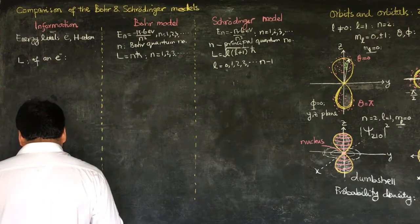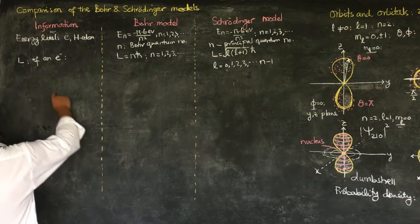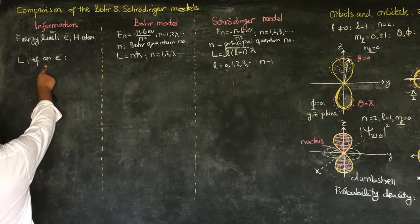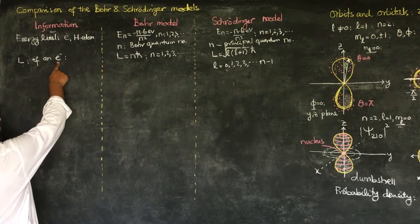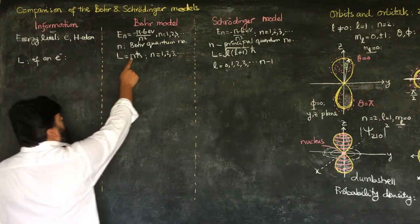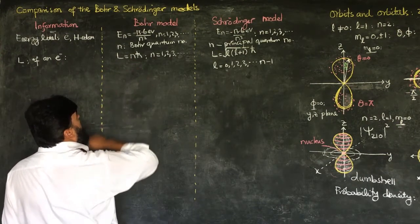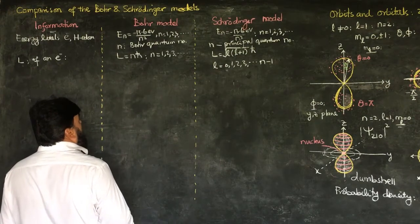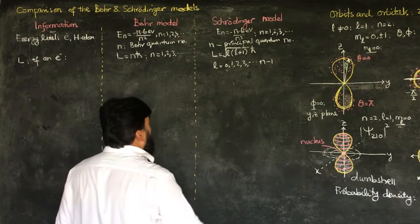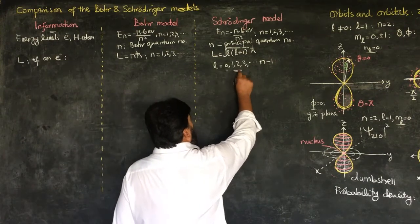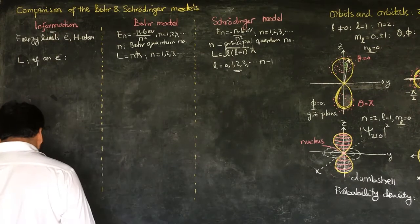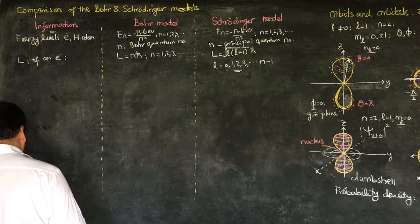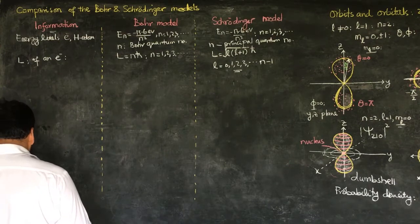Is there any possibility that the angular momentum of the electron is zero? The Bohr model says there is no possibility for an electron to have zero orbital angular momentum. But the Schrödinger model says yes, it is possible — l equal to zero is the orbital in which we have zero angular momentum of the electron.